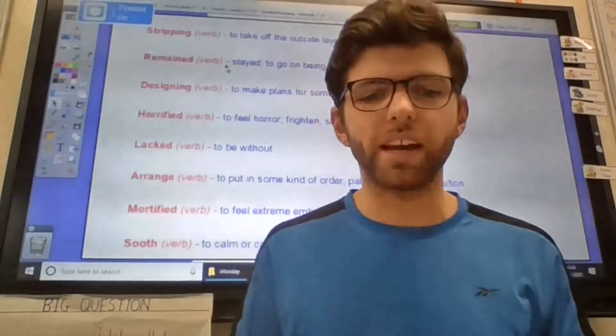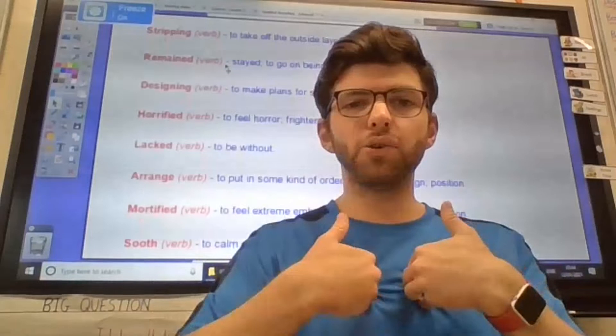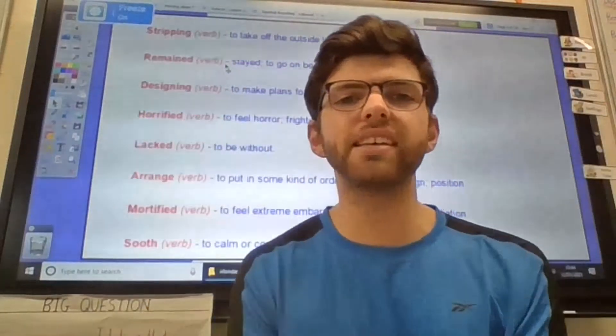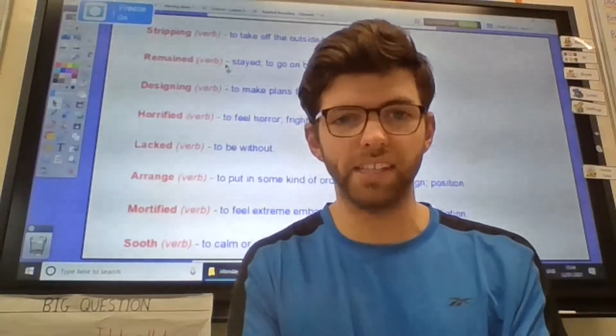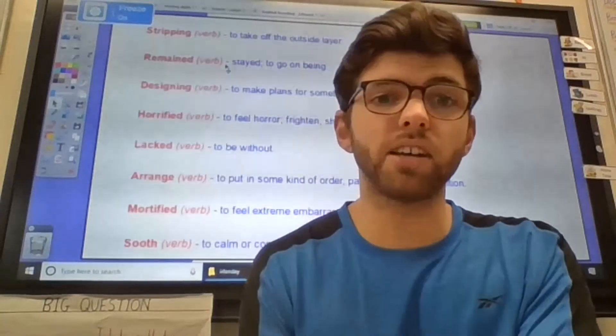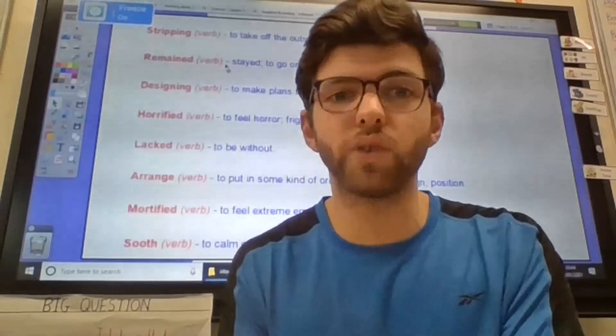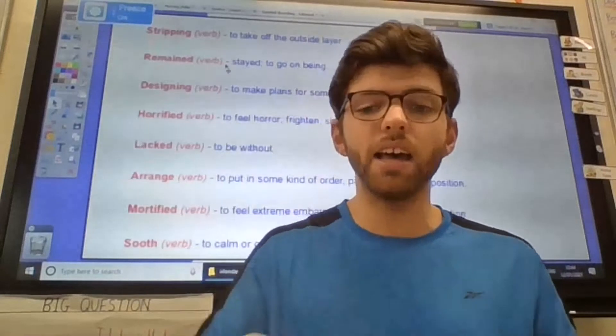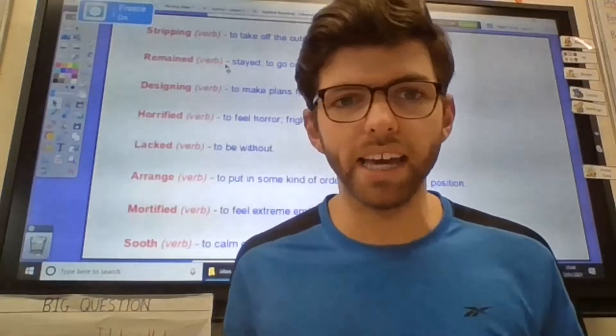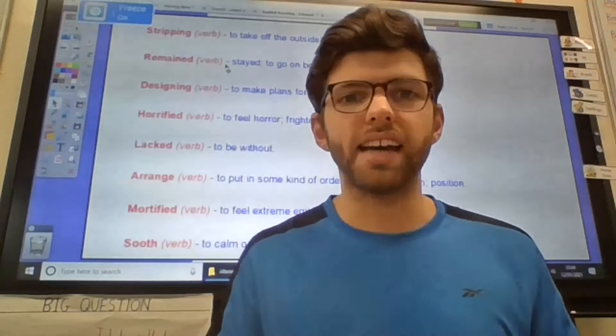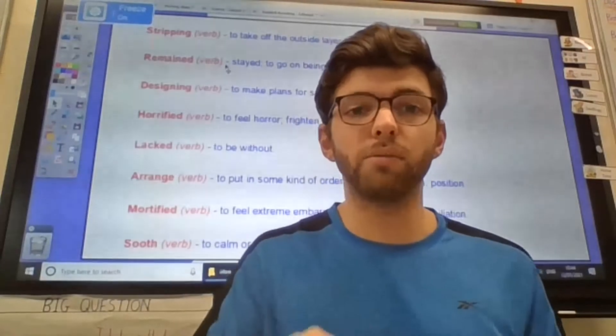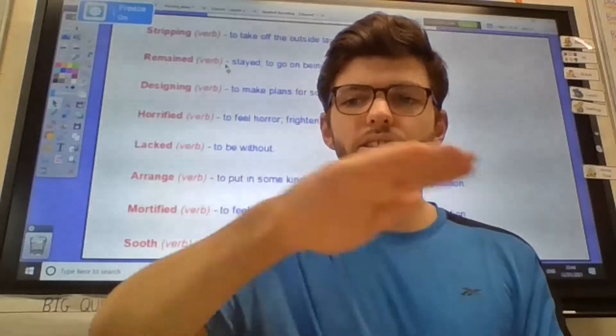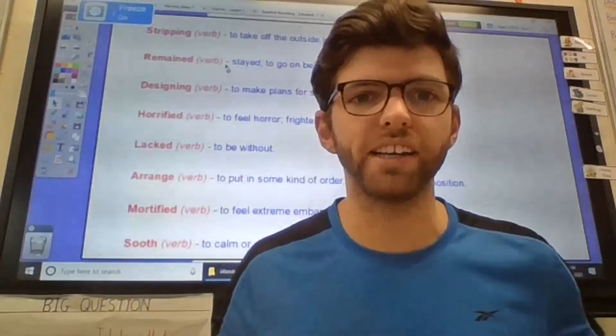And our final action that we're going to look at is soothe. Very good. Now, soothe is a verb which means to calm or comfort something or somebody. So for example, if a baby was screaming and you wanted to soothe them, you might soothe them by perhaps stroking their head or their hair or singing them a lullaby. It means to calm someone down. So for soothe, I want you to imagine that you're stroking something. Our action is going to be soothe. Very good.